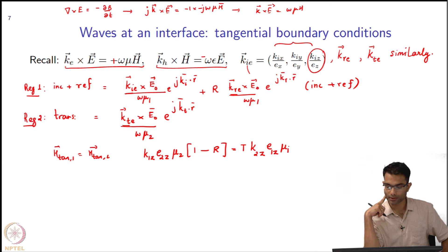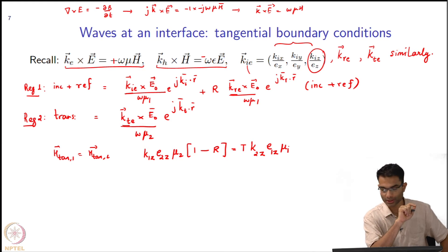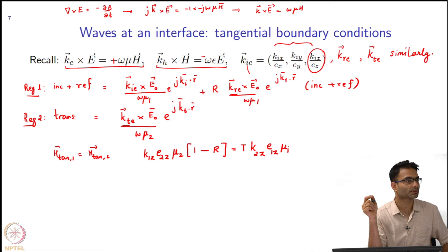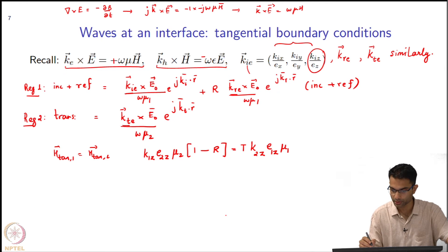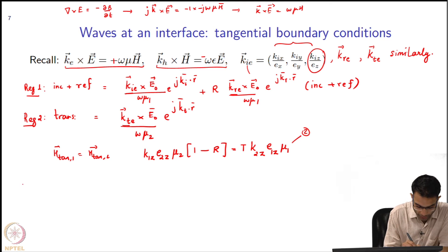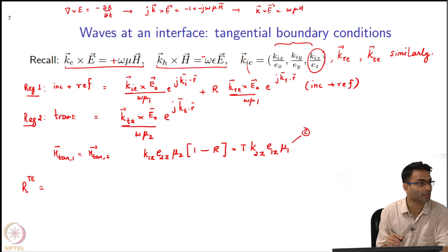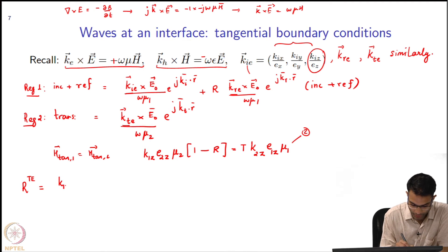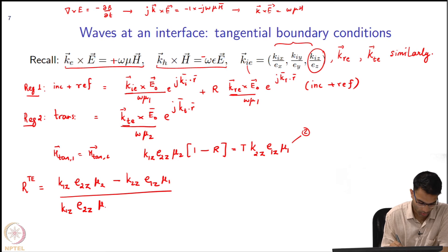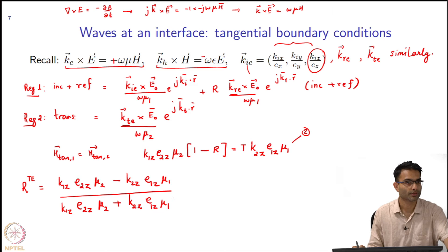So what is this 1 and 2? epsilon_1 and epsilon_2 refer to region 1 and region 2 — epsilon_1z is the epsilon_z in region 1, epsilon_2z is epsilon_z in region 2. I have got my two equations in two variables. This was my first equation and this is my second equation. Putting it together, the reflection coefficient in TE polarization — two equations in two variables — the answer is: r_TE = (k_1z epsilon_2z / mu_2) minus (k_2z epsilon_1z / mu_1), over the sum.